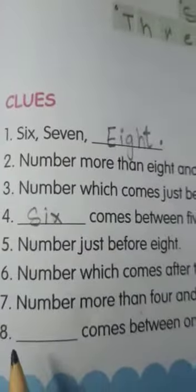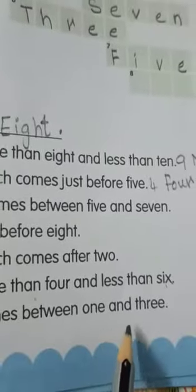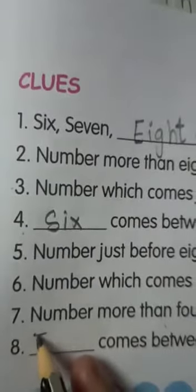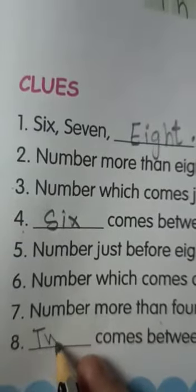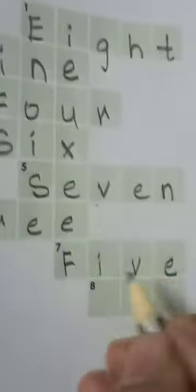The last eighth is, what comes between 1 and 3? 2. T, W, O, 2. T, W, O, 2. Let's write it here. T, W, O, 2. So, complete this puzzle in your textbooks also.